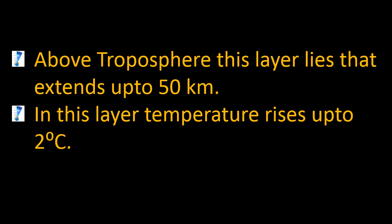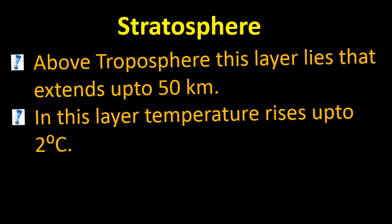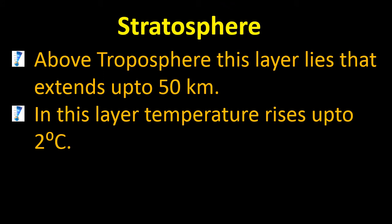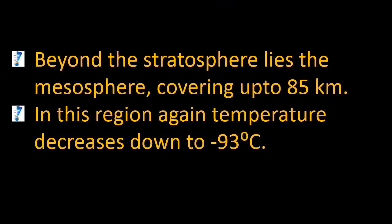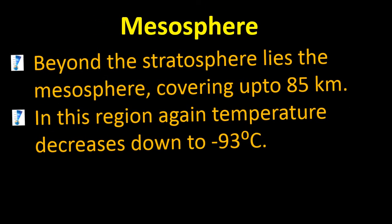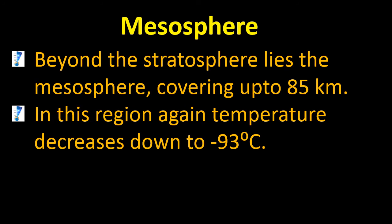Above troposphere lies the stratosphere, which extends up to 50 km. In this layer, temperature rises up to 2 degrees Celsius. Mesosphere covers up to 85 km beyond the stratosphere. In this region, temperature again decreases down to minus 93 degrees Celsius. This is a very important short question: in mesosphere, temperature decreases down to negative 93 degrees Celsius.